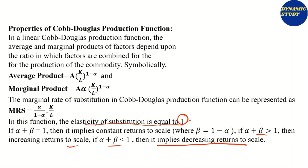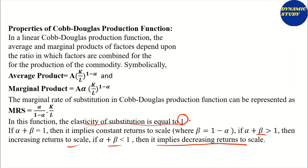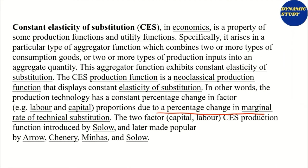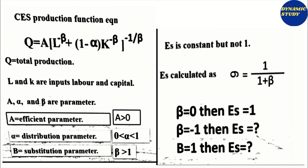Because we know the formula for elasticity of substitution, when constant elasticity of substitution holds, it follows that production technology will show a constant percentage change in factor proportion K by L due to the percentage change in the marginal rate of technical substitution. This was introduced by Solow and later popularized by Arrow, Chenery, Minhas, and Solow. This is how the CES production function looks.